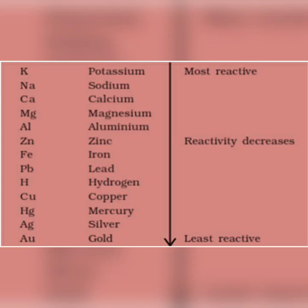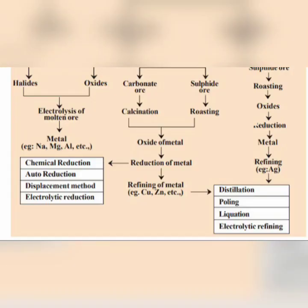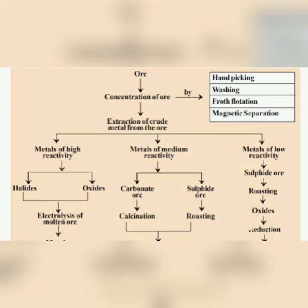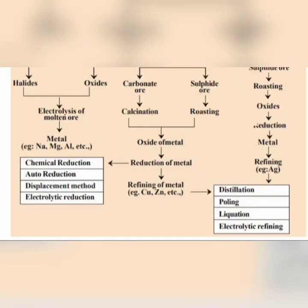Ores are mainly four types. Carbonate ores, oxide ores, sulphide ores and halide ores. Mainly we have oxide ores and sulphide ores. For oxide ores, we use gravity process. Sulphide ores, we use flotation method.